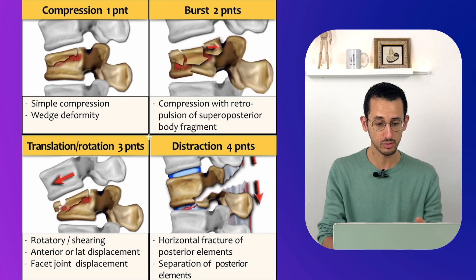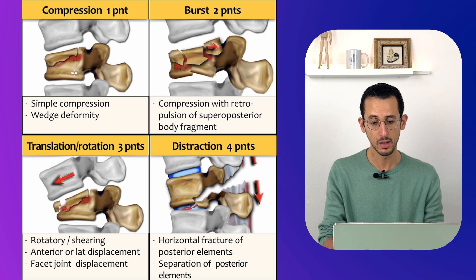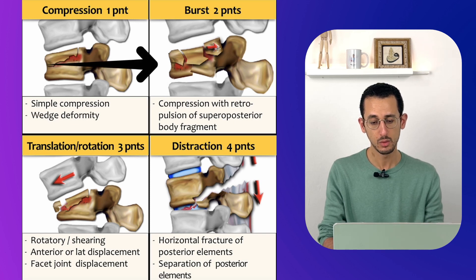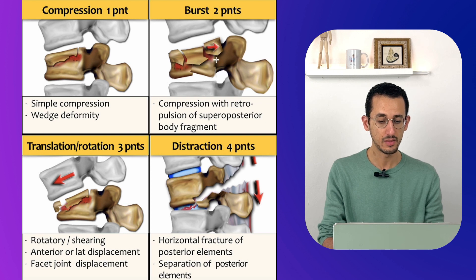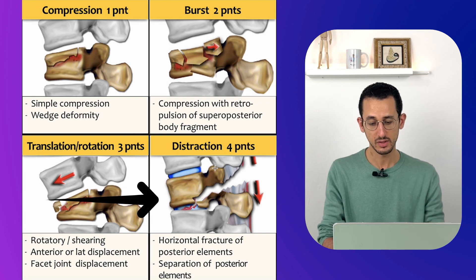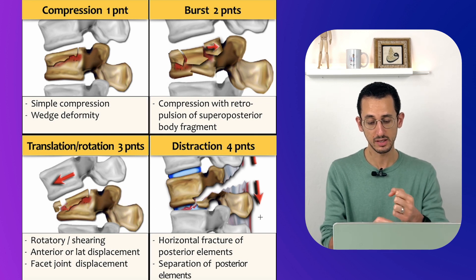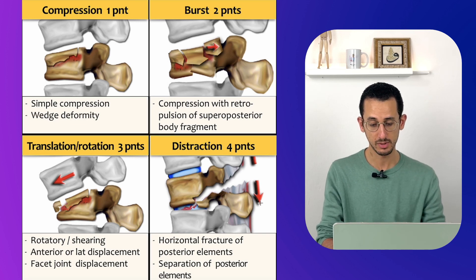This is simply the morphology. Compression, which can be a simple compression with wedge deformity, takes one point. Burst fracture, where there is disruption of the posterior vertebral wall and sometimes retropulsion of fragments into the spinal canal, takes two points. Translation and rotation takes three points. Or distraction injury takes four points, basically because of disruption of the posterior ligamentous complex.